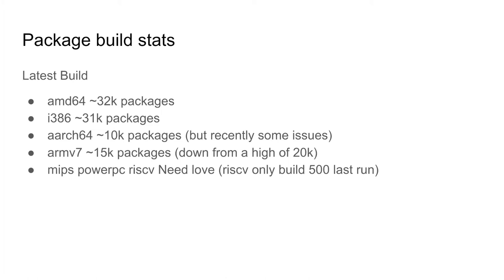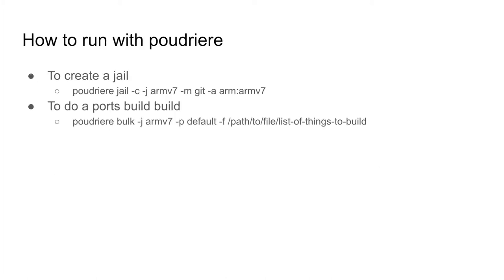MIPS, PowerPC, and RISC-V also appear to have had runners in the past. PowerPC and RISC-V are still current — I'll talk about what happened to MIPS later. RISC-V only seemed to have about 500 packages built, though I may have been reading the stats in a hurry.